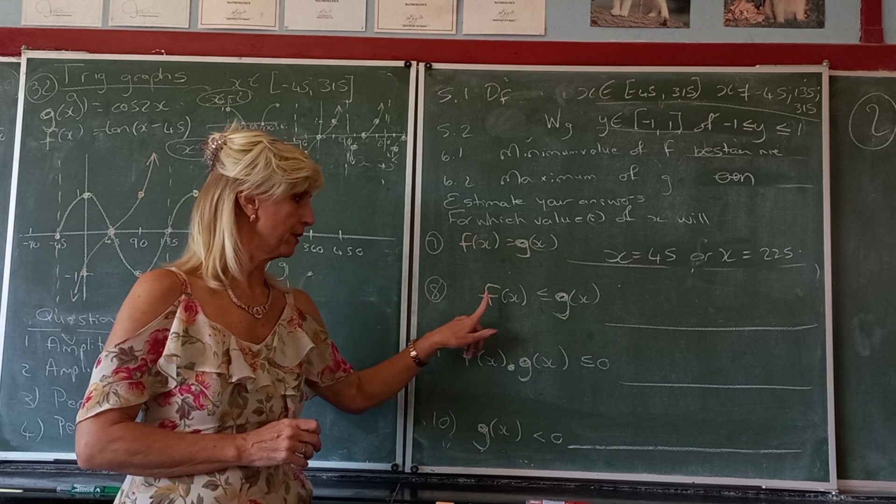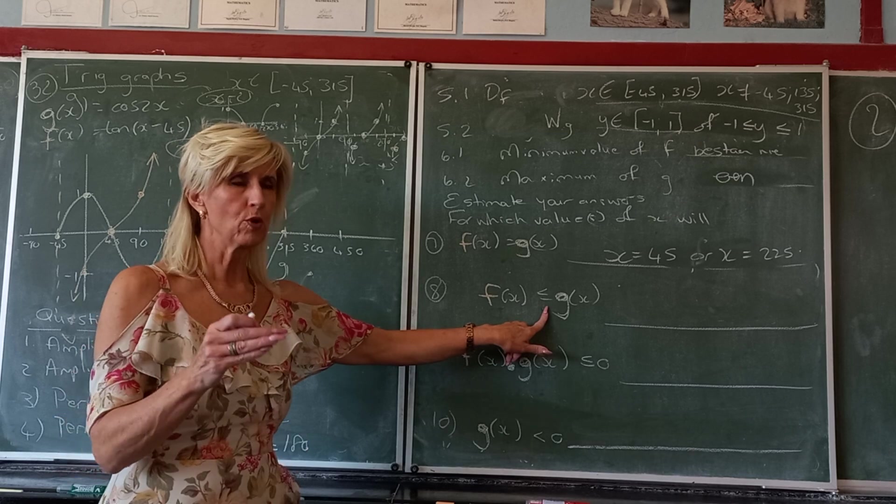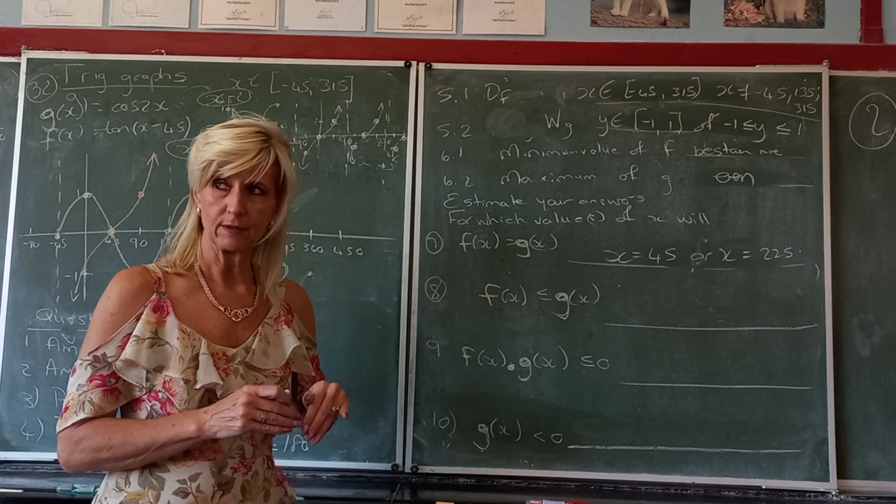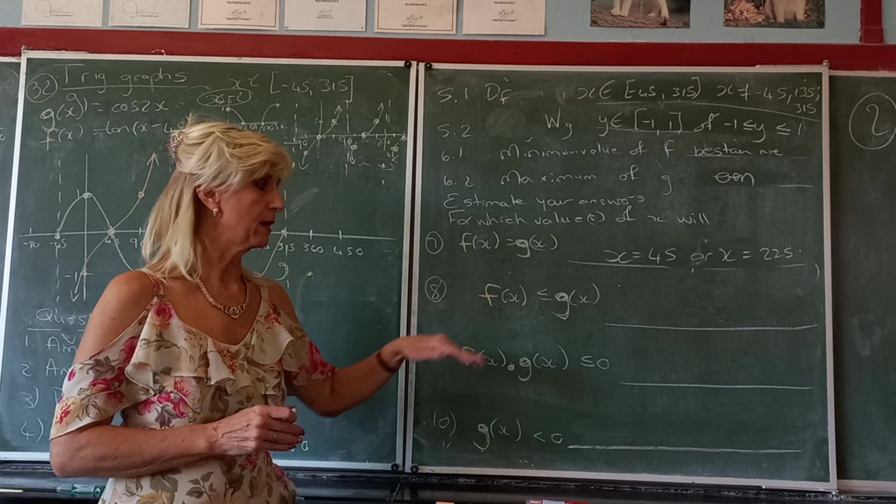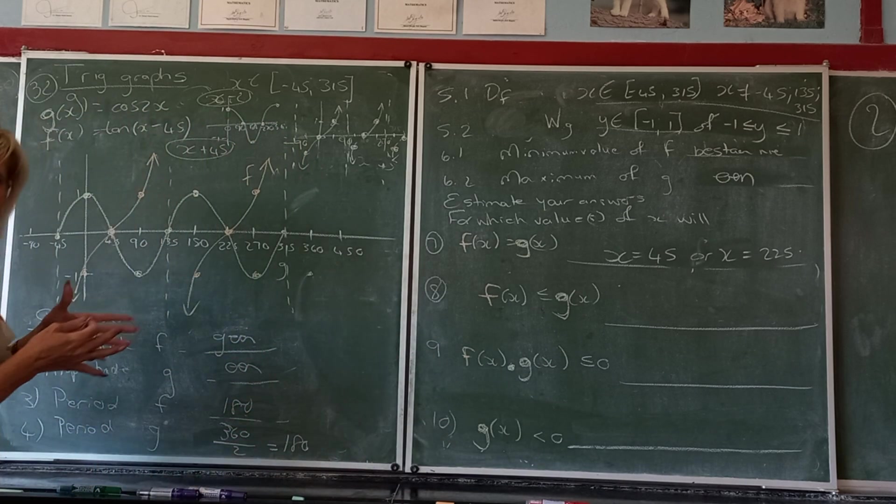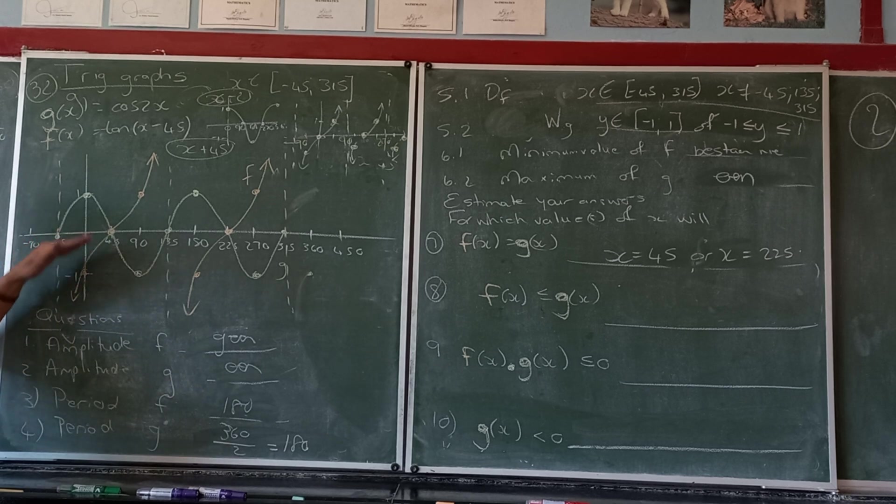Where is the orange graph smaller than the yellow one? Now you did this last year as well. Let's see if you can still remember. Where is the orange graph smaller than the yellow one means where is the orange one below? So the orange smaller than the yellow means the orange one is below.